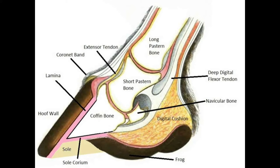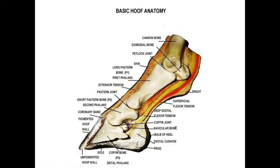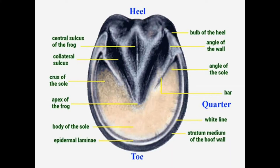Before going to tendinitis, please look at the anatomy of the equine hoof. This is a transverse view — you can see the different bones and different parts of the equine hoof. Please pause the video and look into the details. This is a more detailed view of the basic hoof anatomy. You can see the different flexor tendons: the superficial flexor tendon and deep digital flexor tendon, and extensor tendons on the ventral and dorsal aspects respectively.